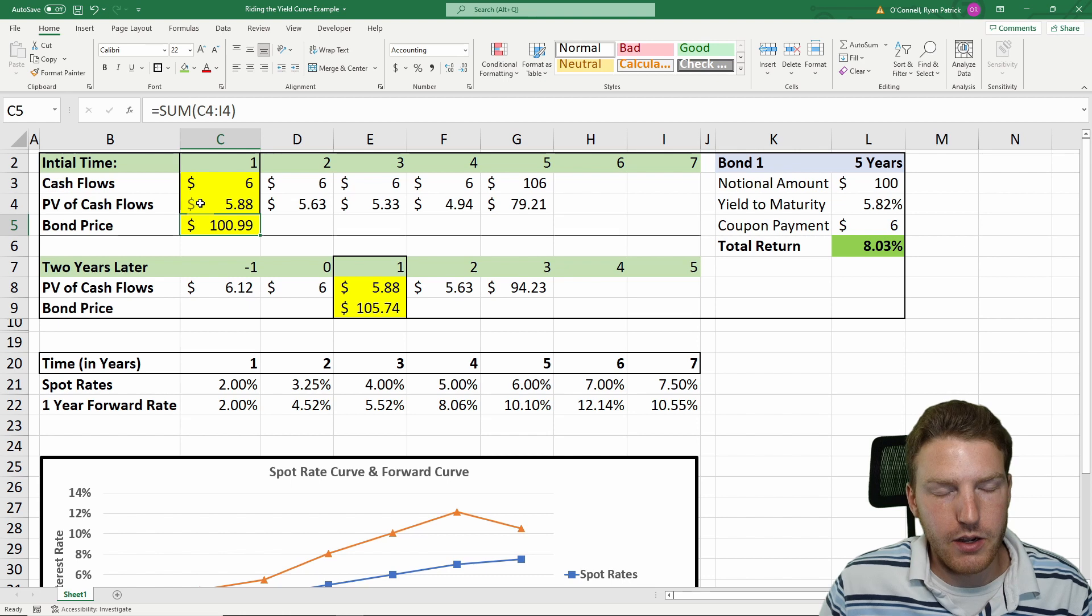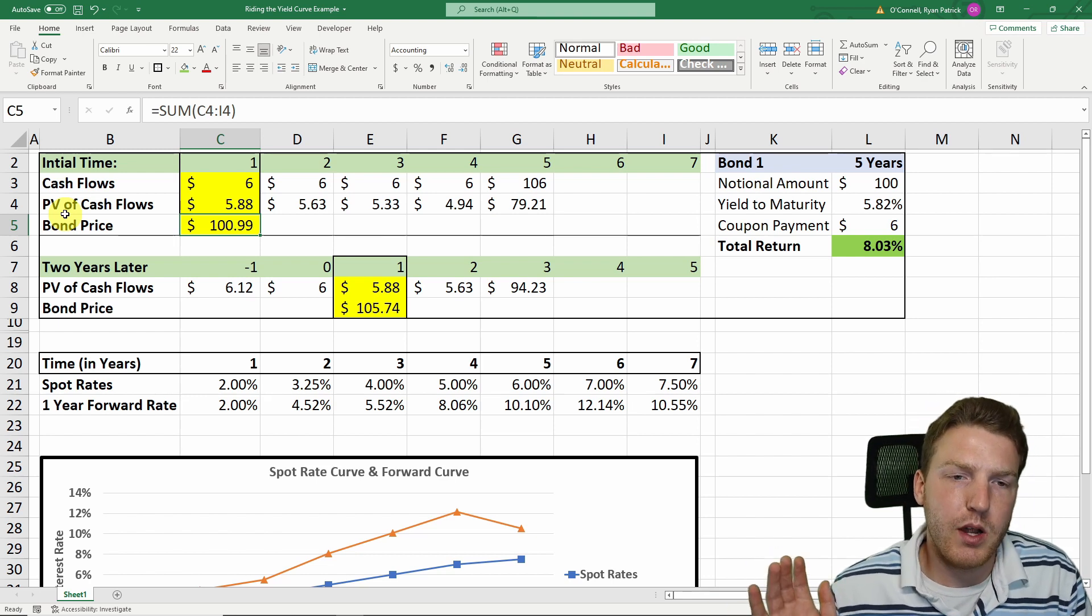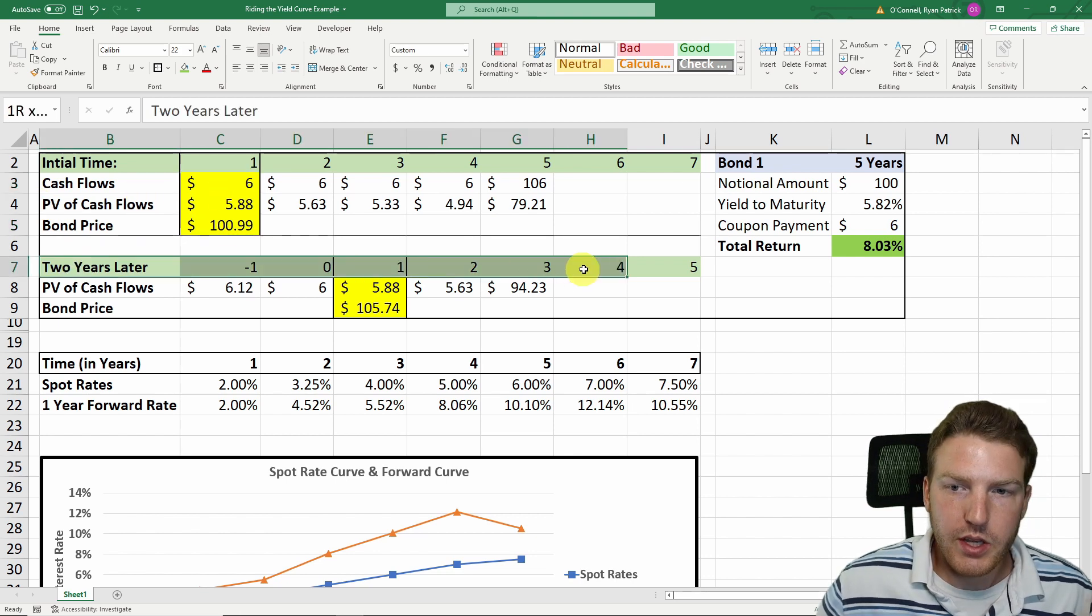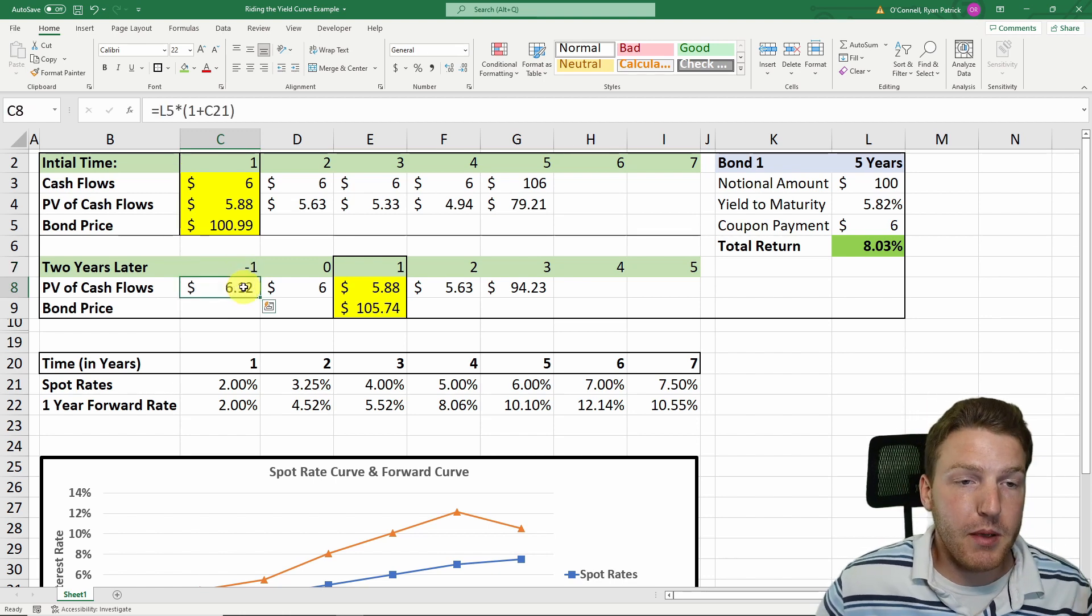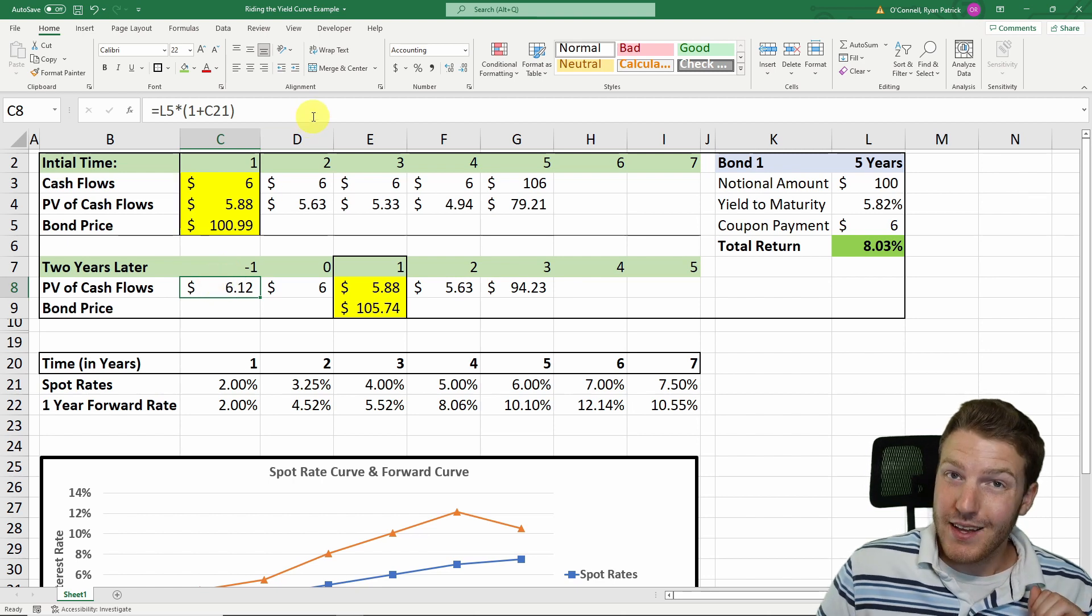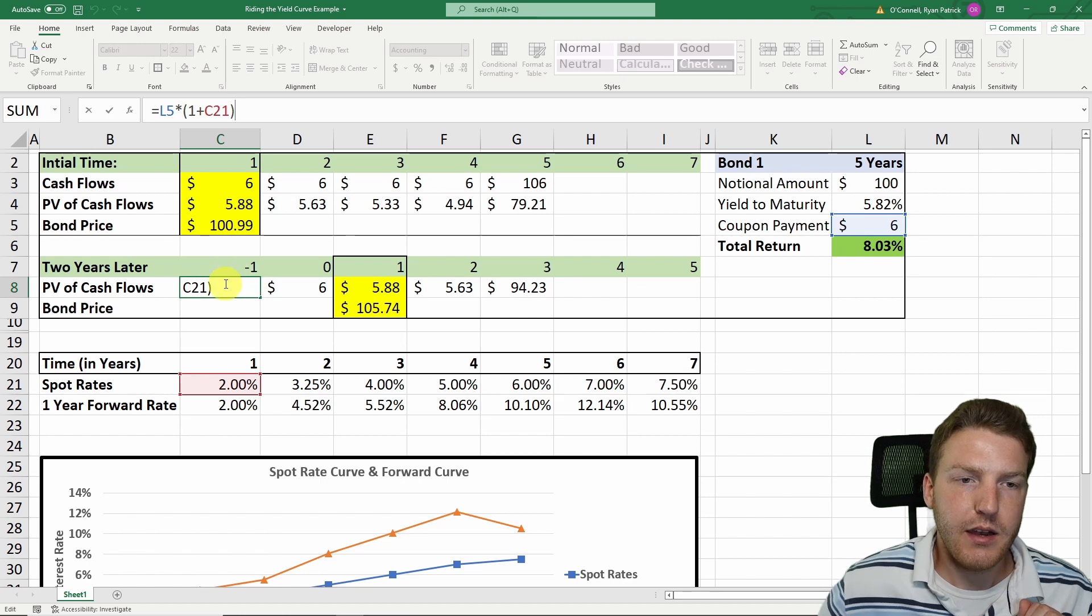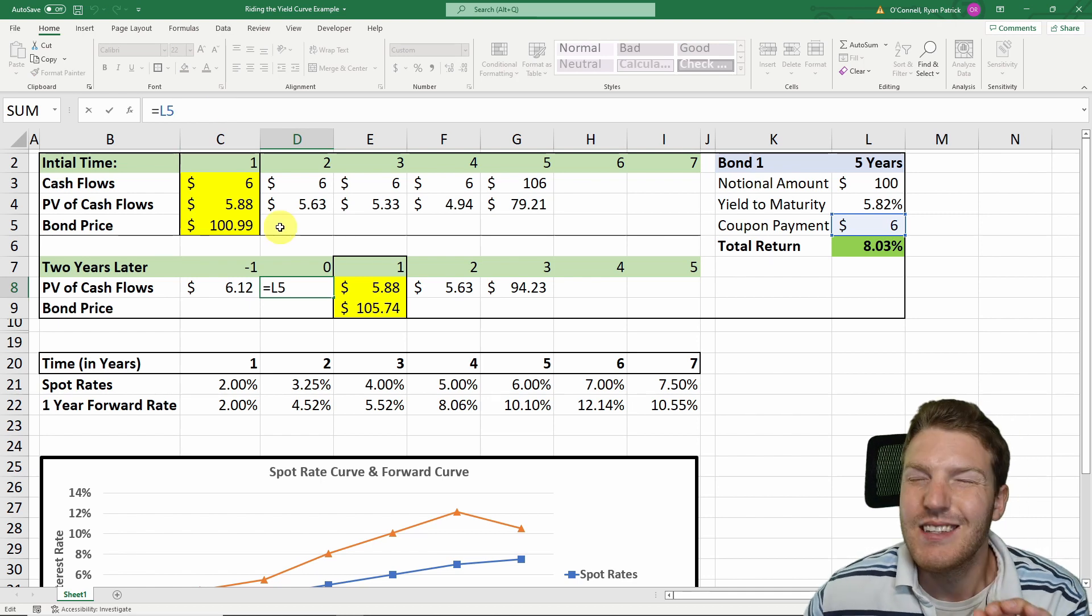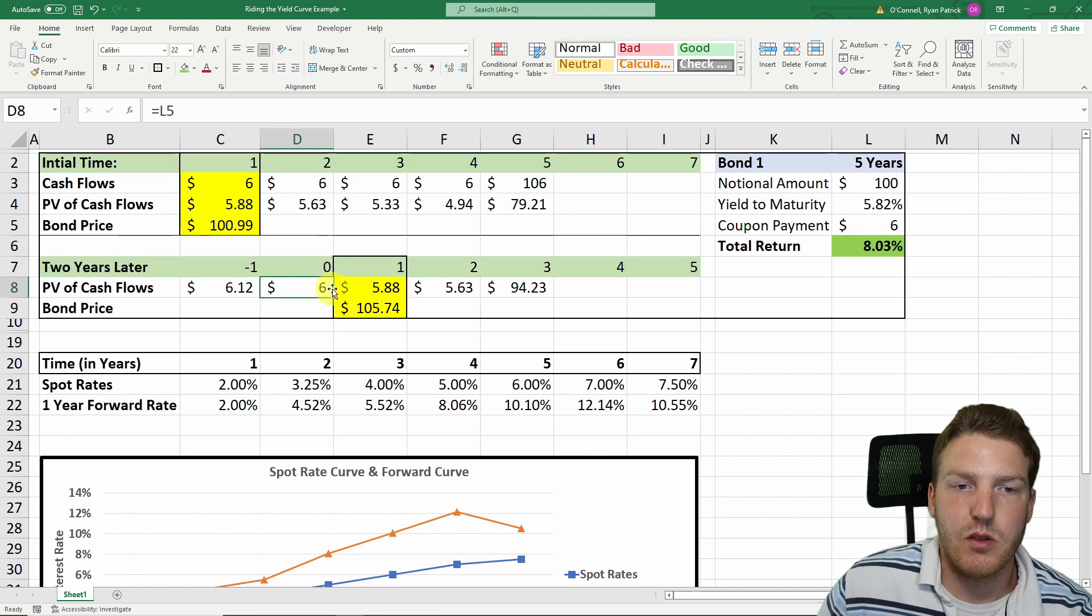But what happens two years later? We have this strategy where we wanted to buy a longer maturity bond, and then we wanted to sell it two years into the future to get extra yield. That's what we're looking at down here. Right here is the coupon payment we would have gotten at year one, but then we could have reinvested that. We took that $6, and we multiplied it by one plus that one-year spot rate that we can reinvest at. The two-year coupon payment, we basically got that today. In our timeline, we just got our two-year coupon payment, and then now we're going to sell the bond on the same day.